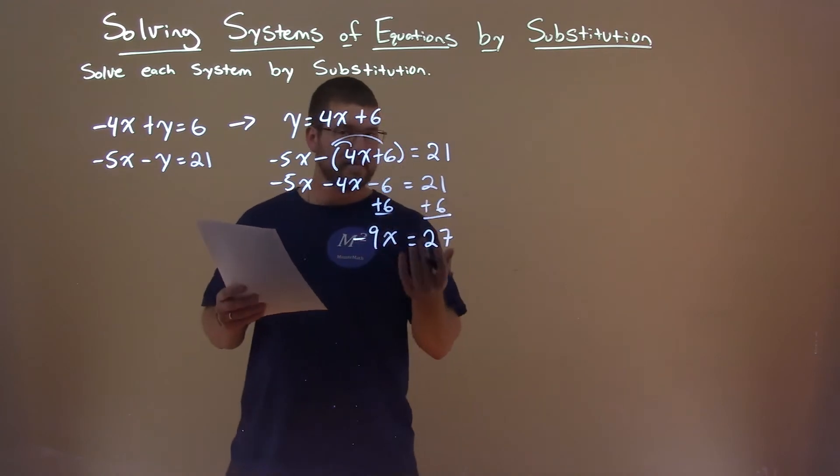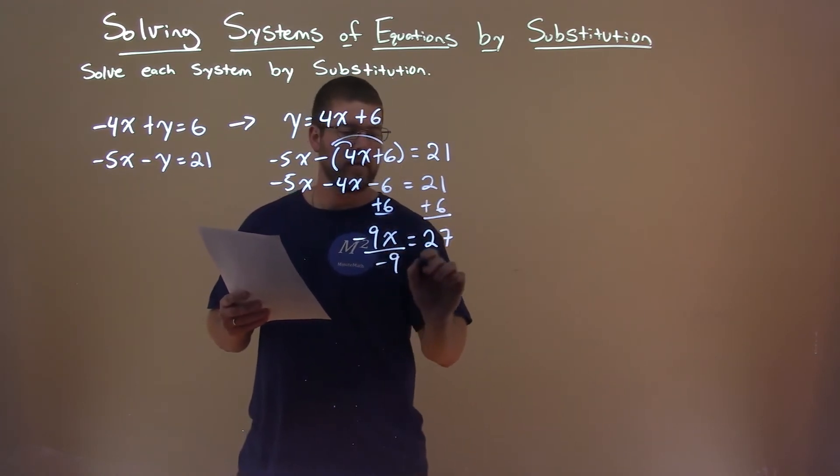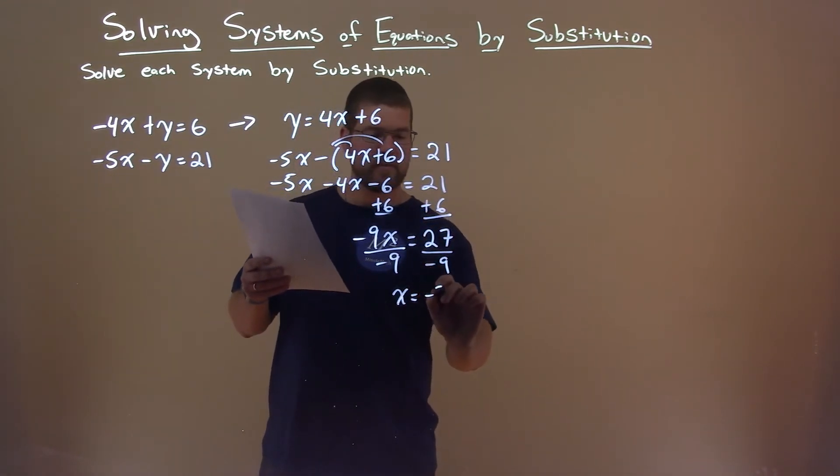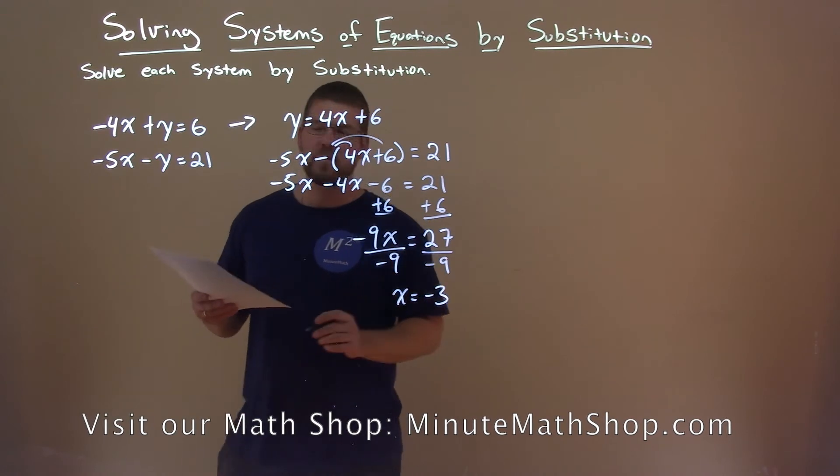From here now, we want to get x by itself, divide both sides by negative 9, and x equals 27 divided by negative 9, which is negative 3. So, we have x equals negative 3 here.